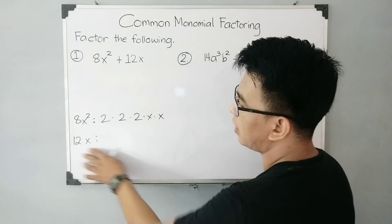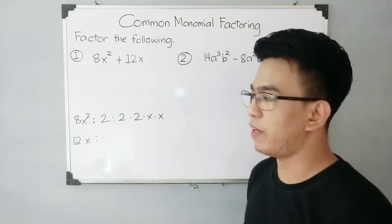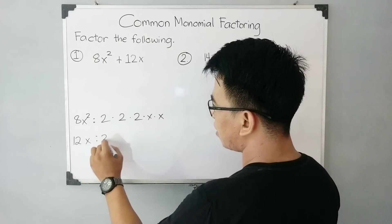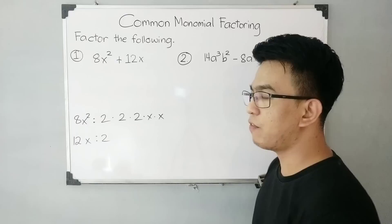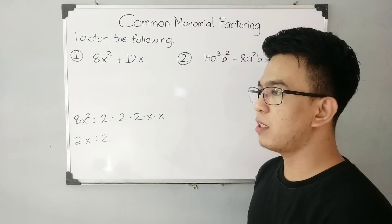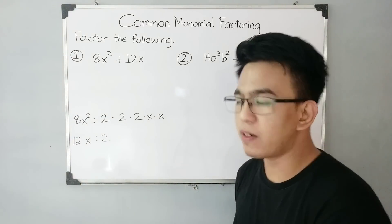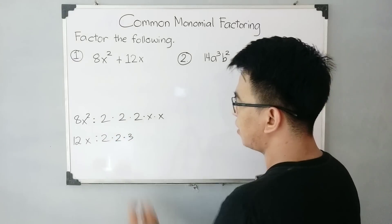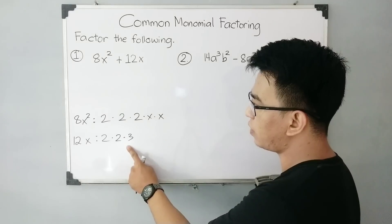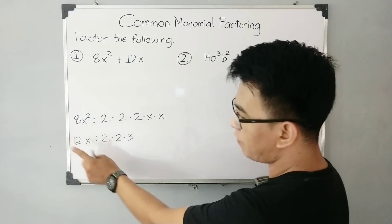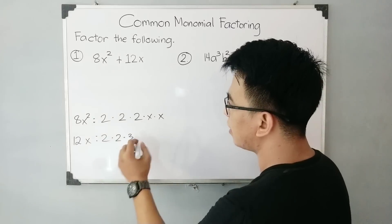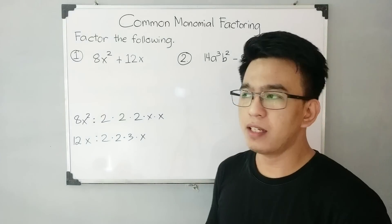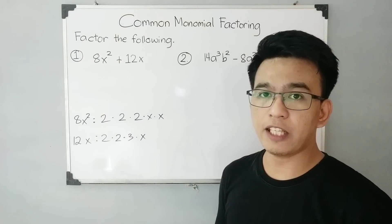We still need to find the prime factors of 12x. For 12, I will start with 2, so I still have 6, because 2 times 6 is 12. And then we can still factor out 6 as 2 times 3. So 2 times 2 times 3 gives you 12. And for the variable, since it's just x, we have times x.